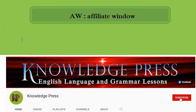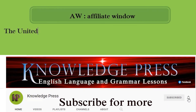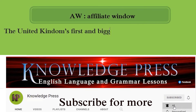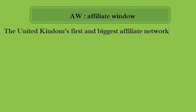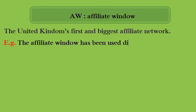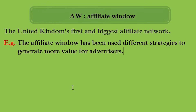Affiliate Window — abbreviation: AW. The United Kingdom's first and biggest affiliate network. For example: the Affiliate Window has been used with different strategies to generate more value for advertisers.